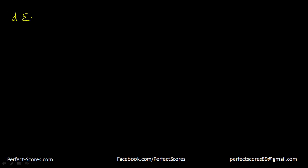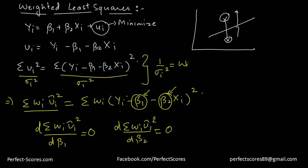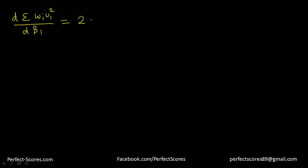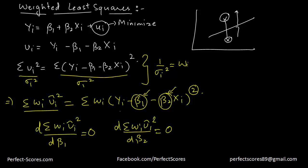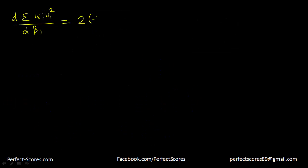Taking the derivative of the summation of wi·ui² with respect to β1: the 2 comes to the front, and since we are differentiating with respect to β1, the negative sign also comes through. This gives us 2 times negative 1 times the summation of wi times (yi minus β1 minus β2xi) raised to the power 1.